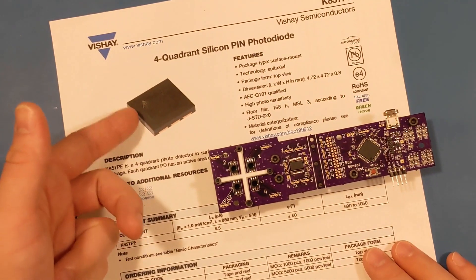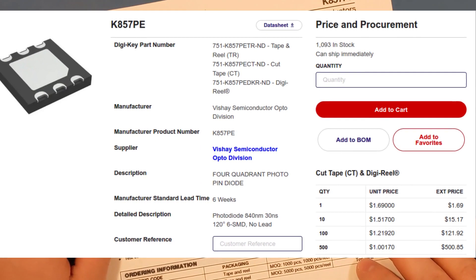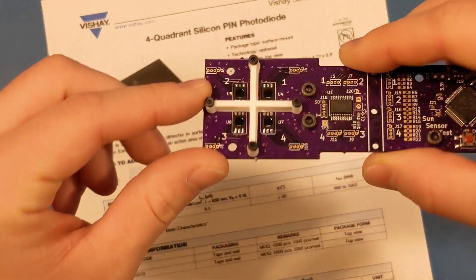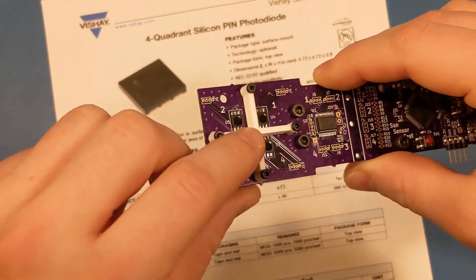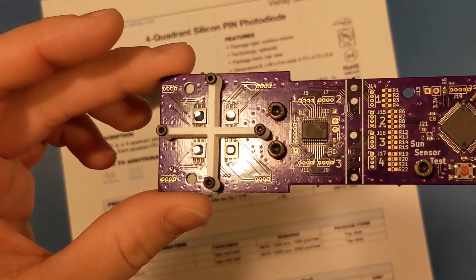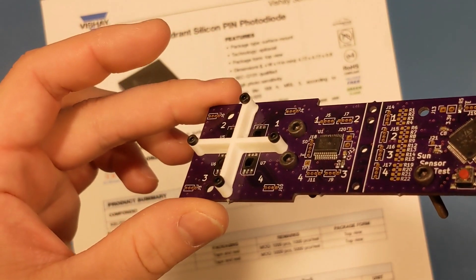And this sensor costs just about a dollar or a little bit over a dollar. And the idea behind this sensor is that this shade, this 3D printed white X, would shade off different parts of the photodiode and which would allow you to determine which way the sun is coming in.